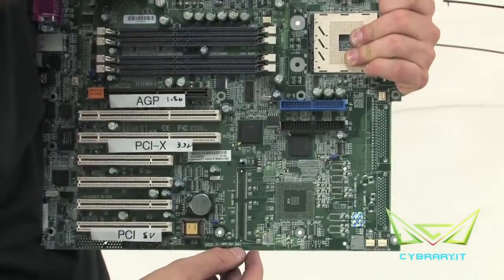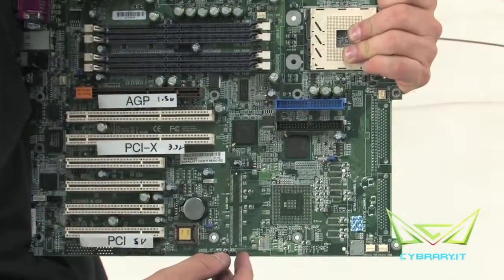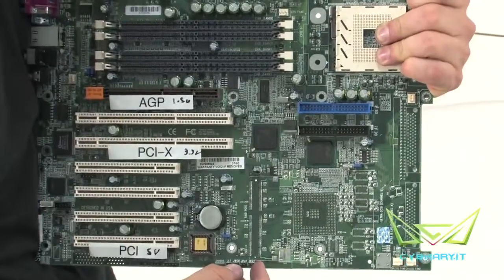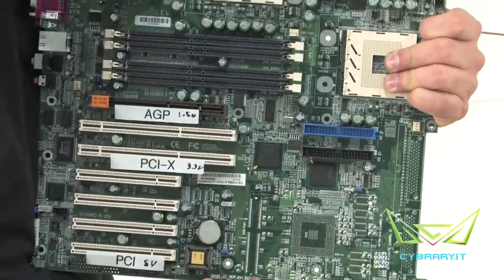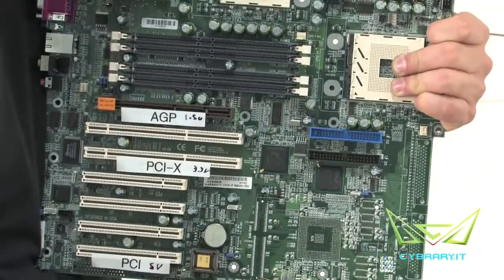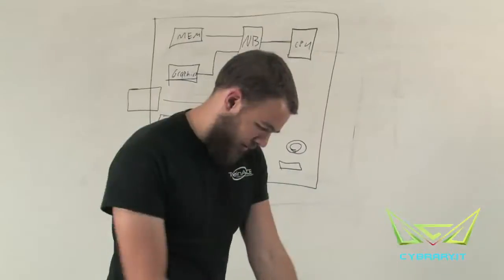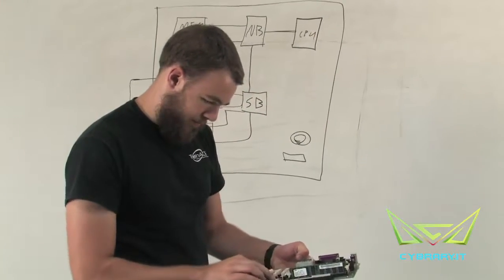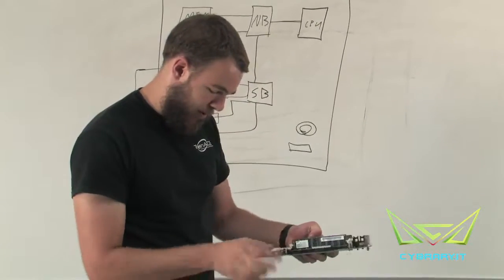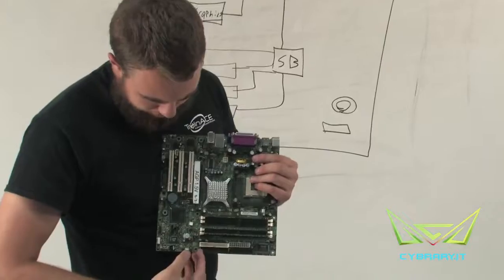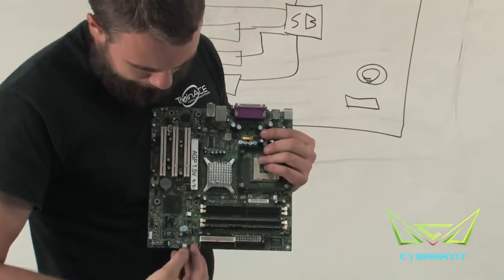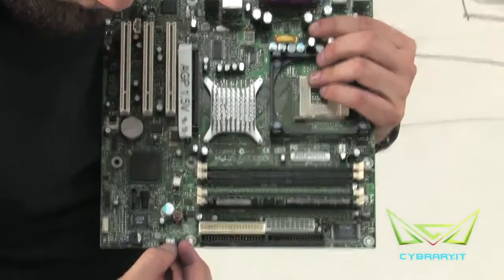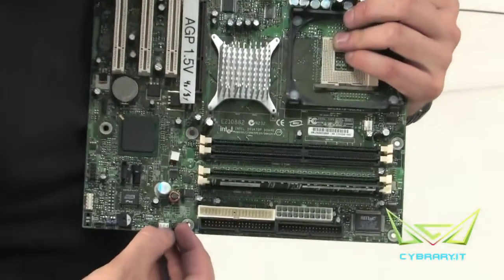With every motherboard it's different, and every motherboard comes with information as far as which each of these jumpers actually controls. For example, on my motherboard here we have jumpers at the bottom, and the center white one actually controls our front fan.